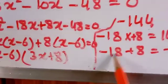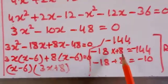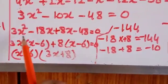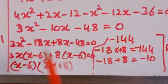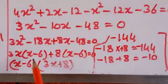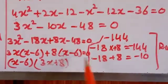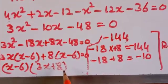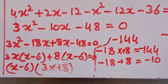Simplifying: 3x² − 10x − 48 = 0. Factoring: 3x² − 18x + 8x − 48 = 0, giving 3x(x − 6) + 8(x − 6) = 0, so (x − 6)(3x + 8) = 0. Therefore the two factors give x = 6 and x = −8/3.